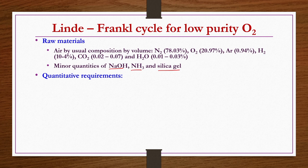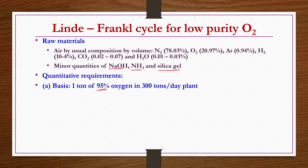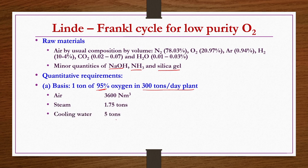From a quantitative requirements point of view, to produce 1 ton of 95 percent pure oxygen in a 300 tons per day plant, 3600 normal cubic meters of air is required, 1.75 tons of steam, 5 tons of cooling water, and 450 to 480 kilowatt hours of electricity. Plant capacity is usually between 50 to 500 tons per day.